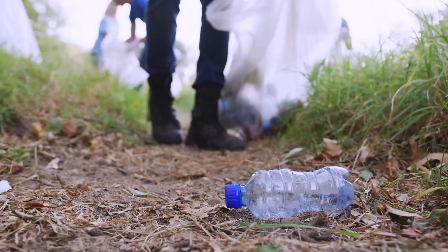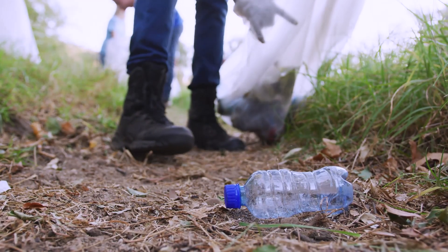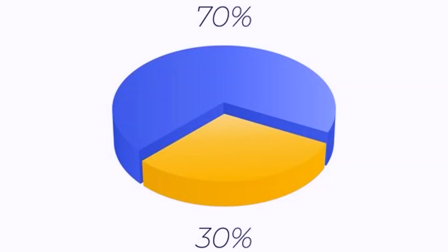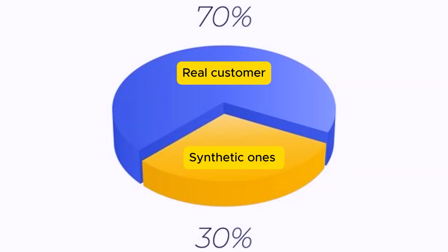Let me break down five essential best practices for synthetic data. Number one is quality control — you absolutely need to filter out garbage or your model will learn garbage. Number two is mixing synthetic and real data. Think of it like cooking where synthetic data is your spice and not the main ingredient. For example, a customer service model might use 70% real customer interactions and 30% synthetic ones that specifically cover edge cases missing from real data.